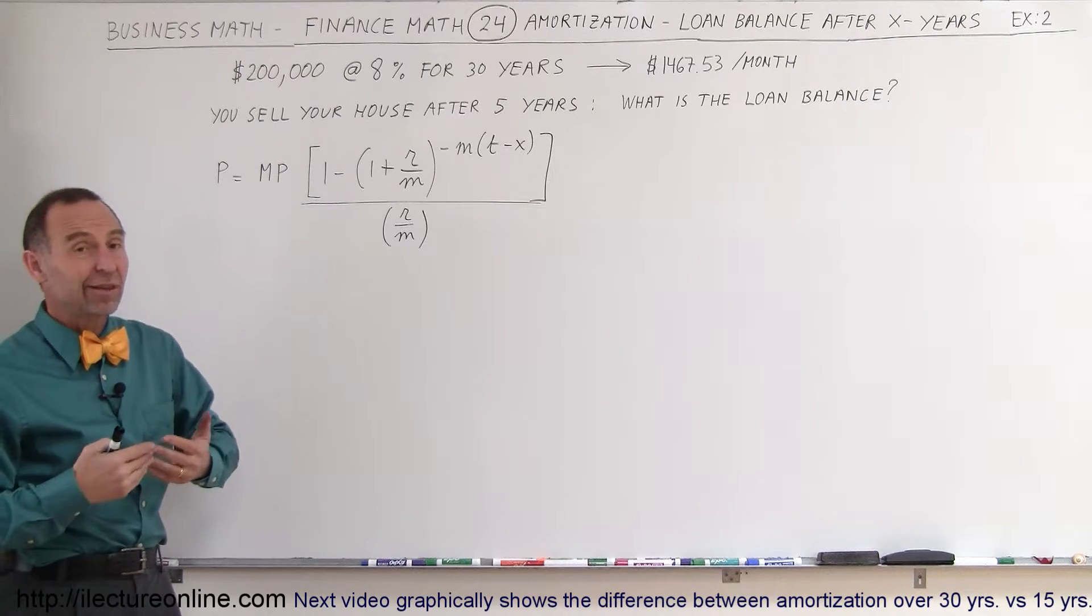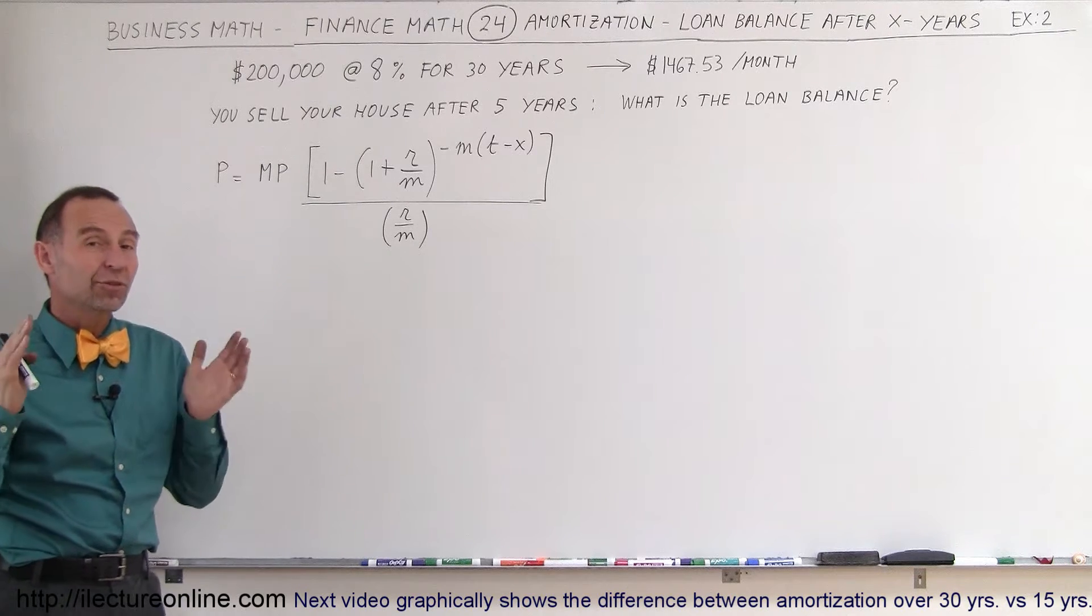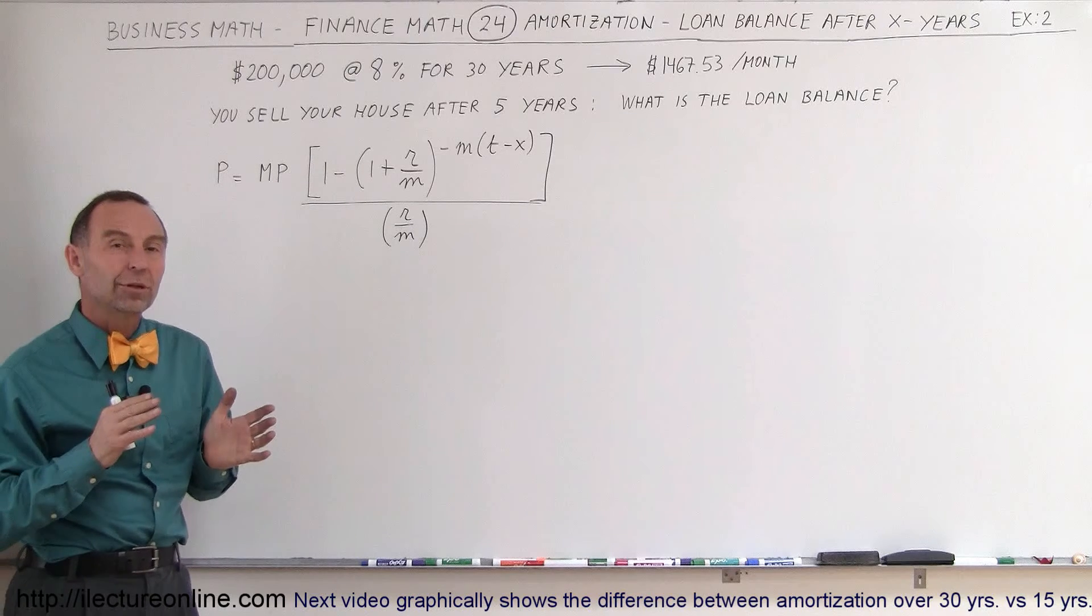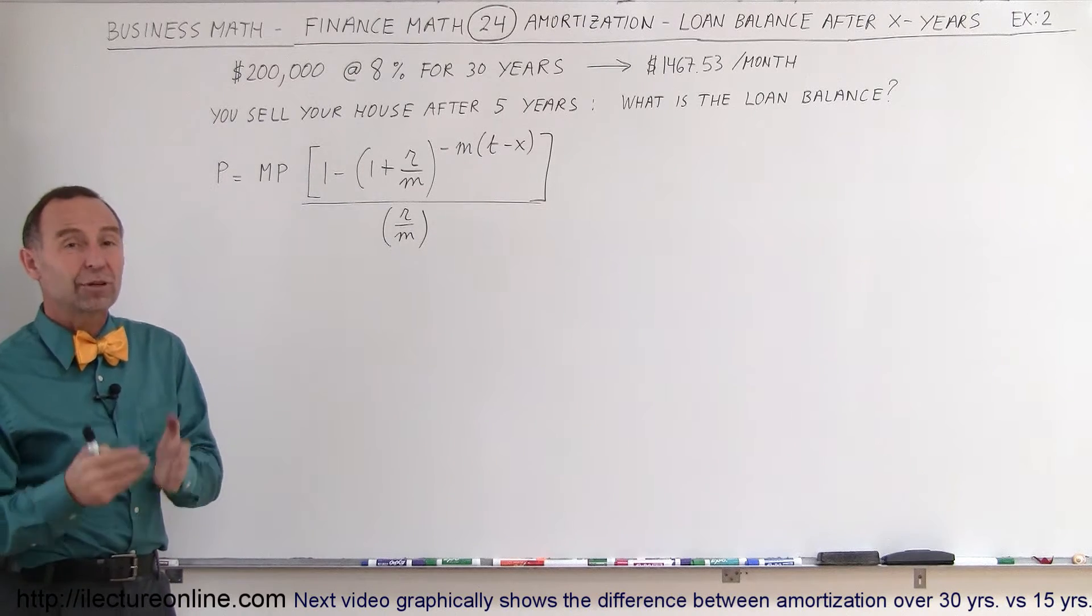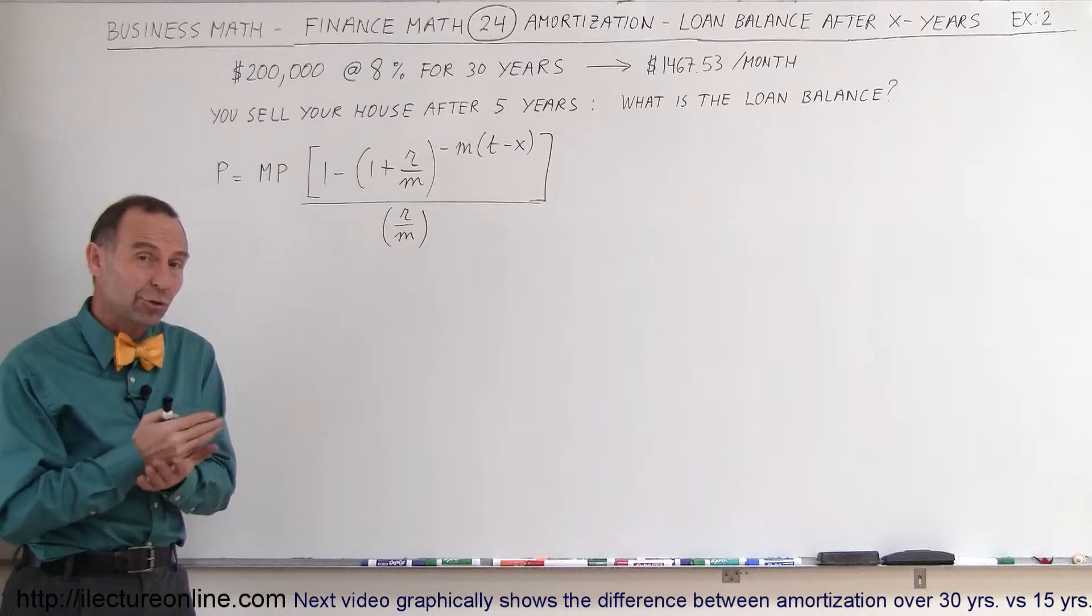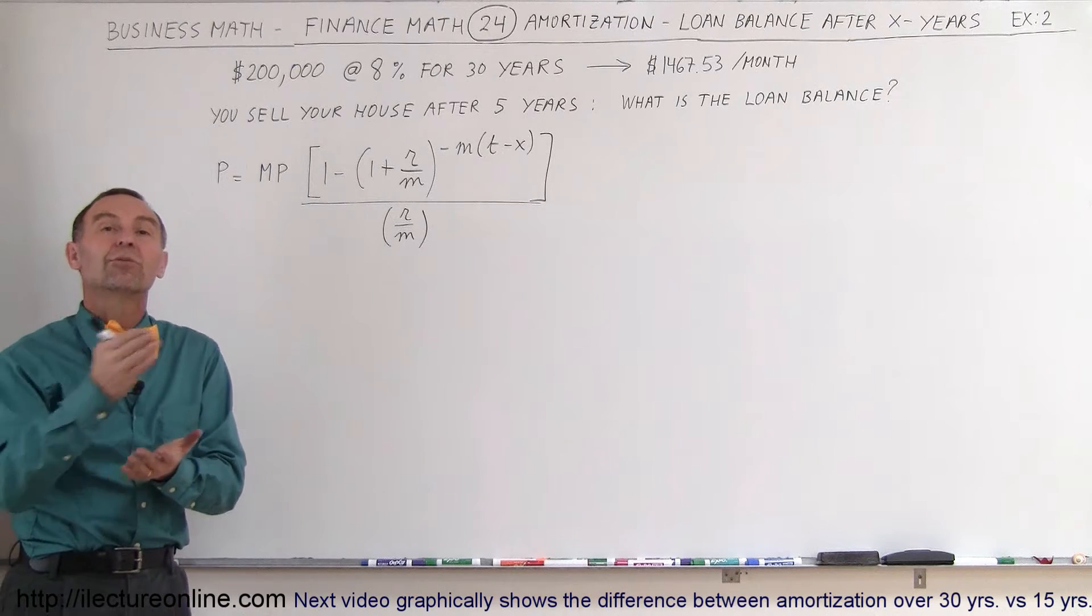After, let's say, five years, a large percentage of the original principal is still not paid off because much of your payments every month actually go to paying interest and not so much principal to the bank.